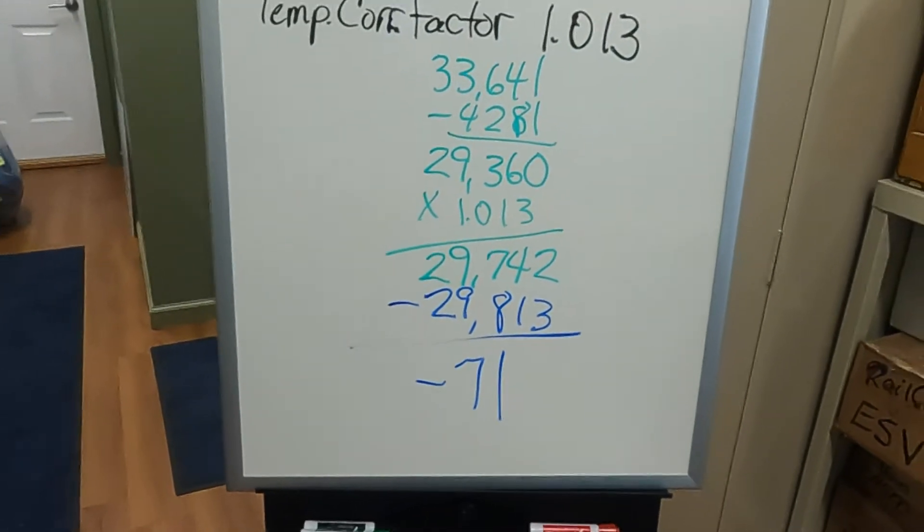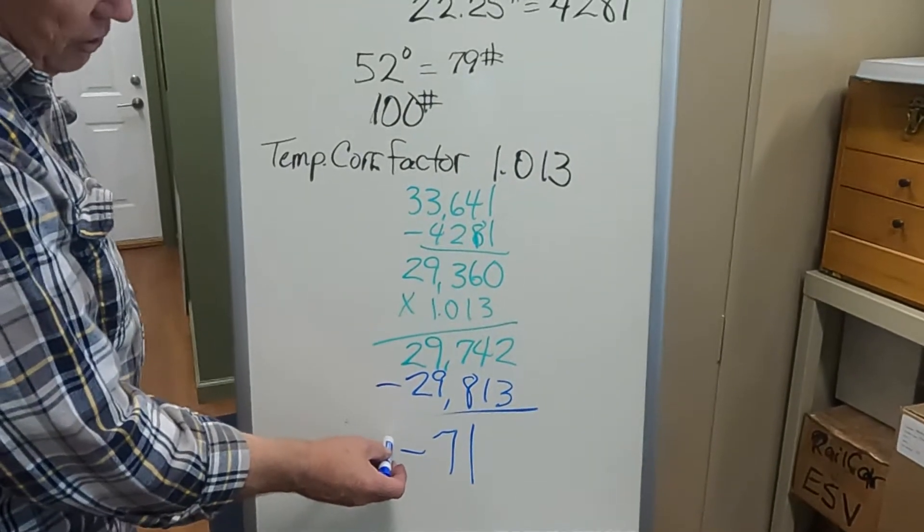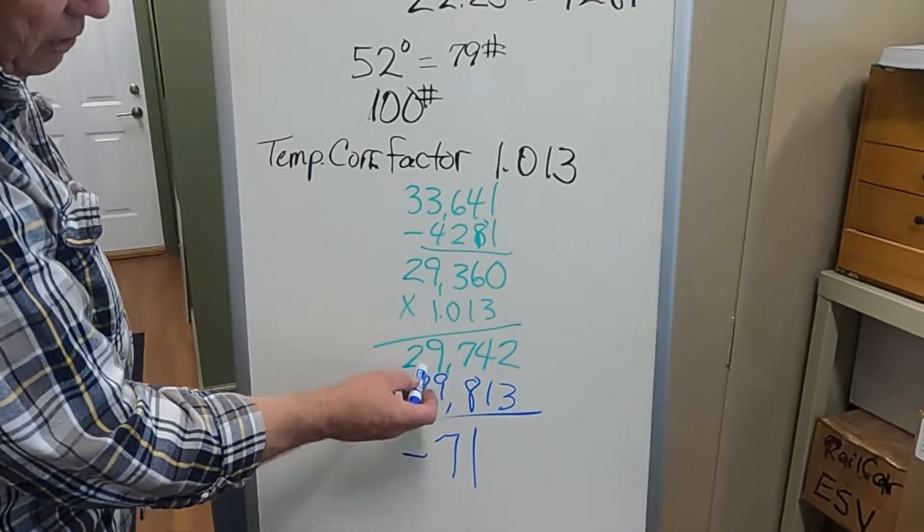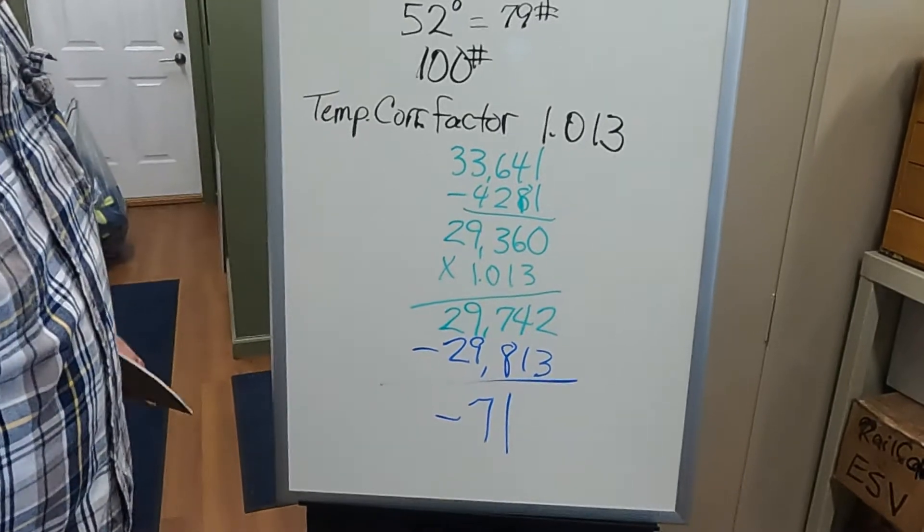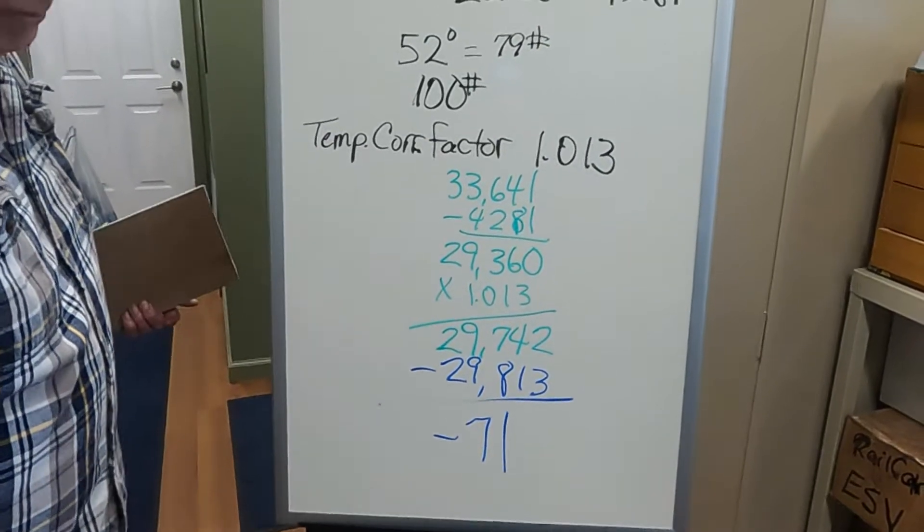We are allowed, as a rule of thumb, your loss has to be greater than 2% before anybody will care. So roughly, you'd have to be short at least 600 gallons before anybody would care.